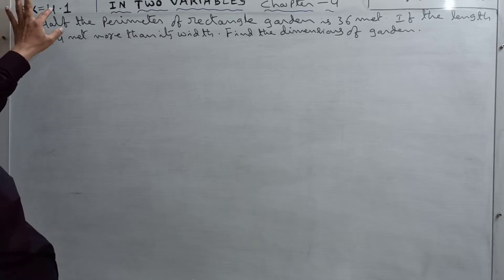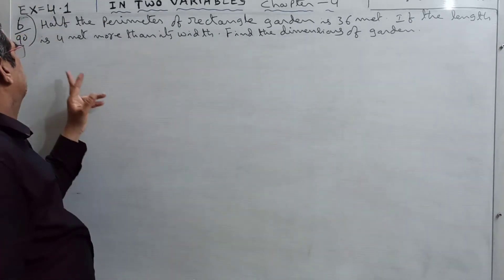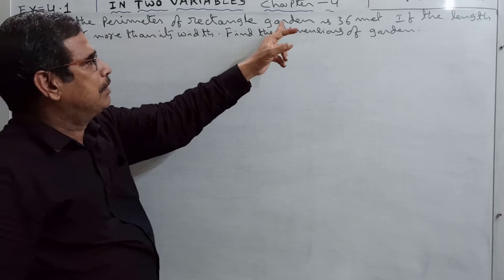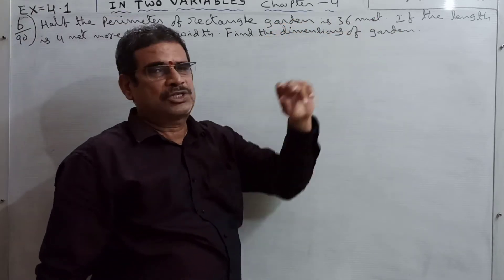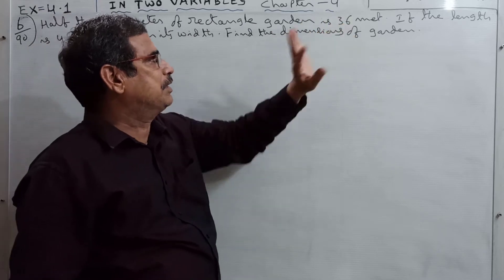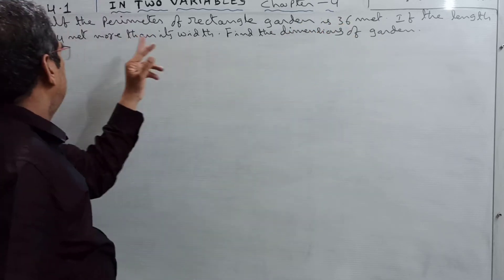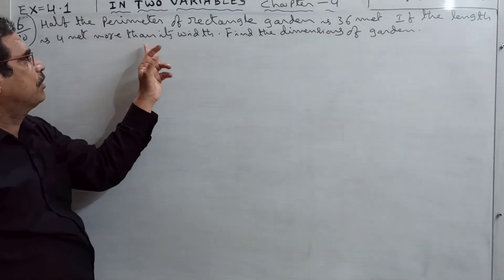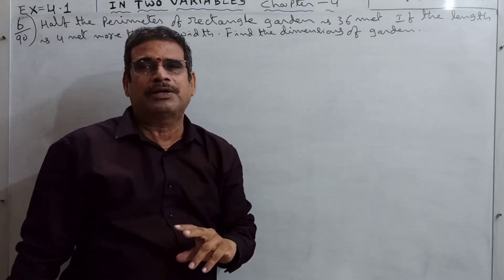Question 6 in exercise 4.1: Half the perimeter of a rectangular garden is 36 meters. If the length is 4 meters more than its width, find the dimensions of the garden.